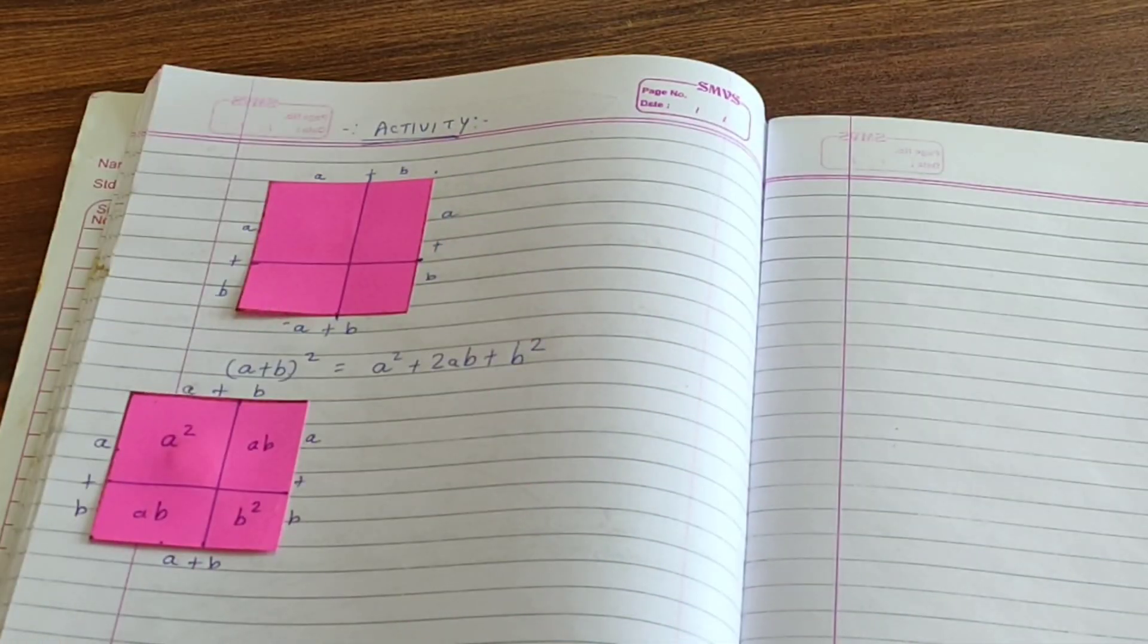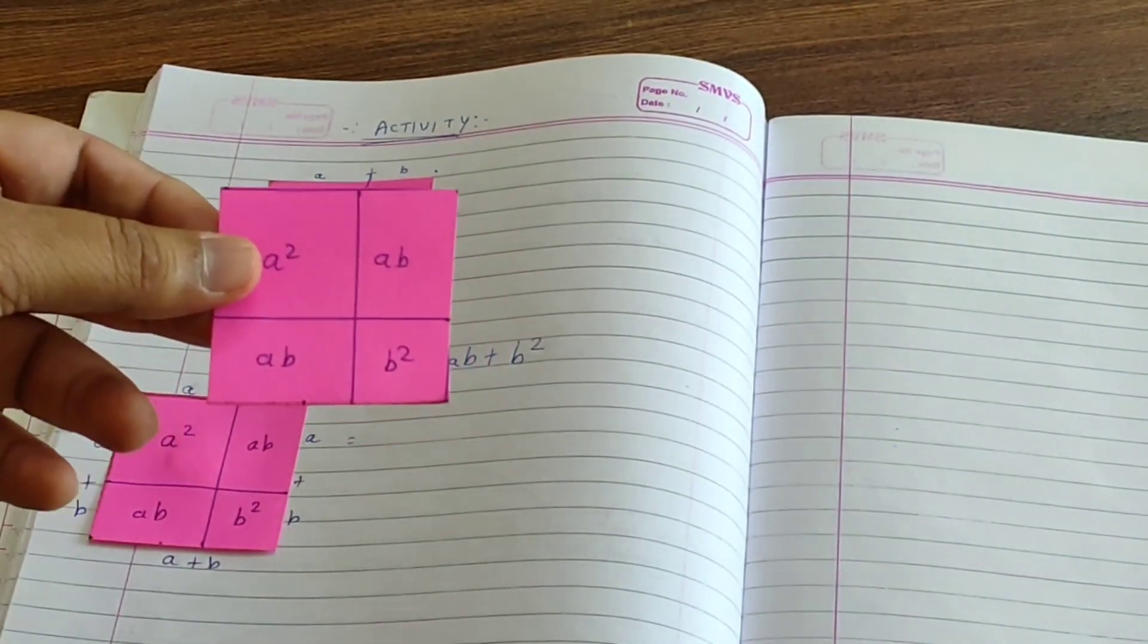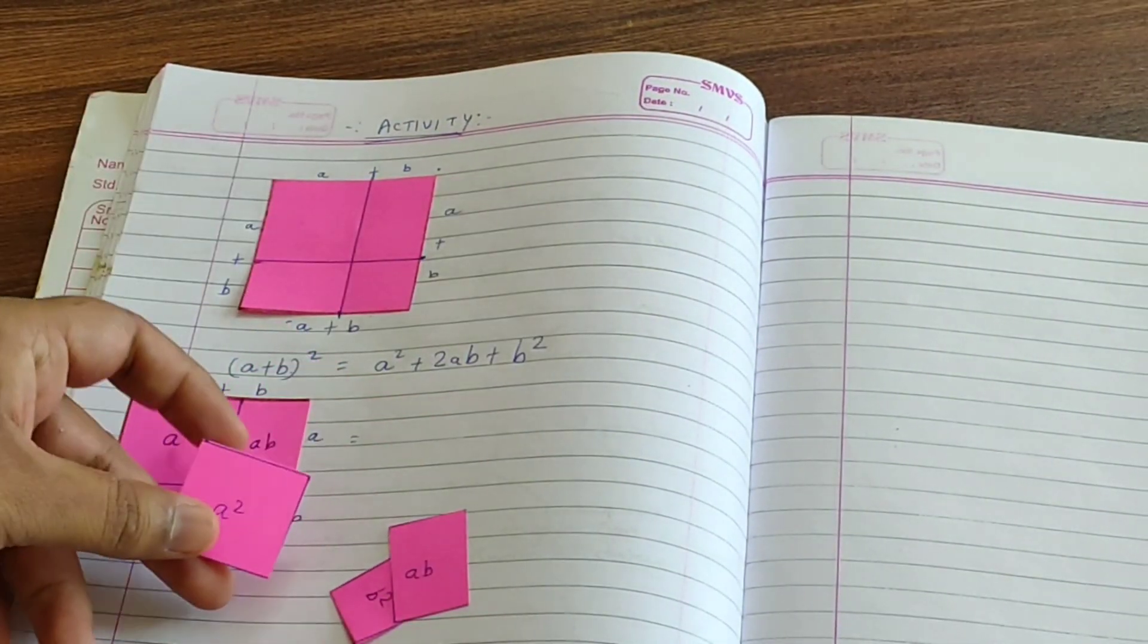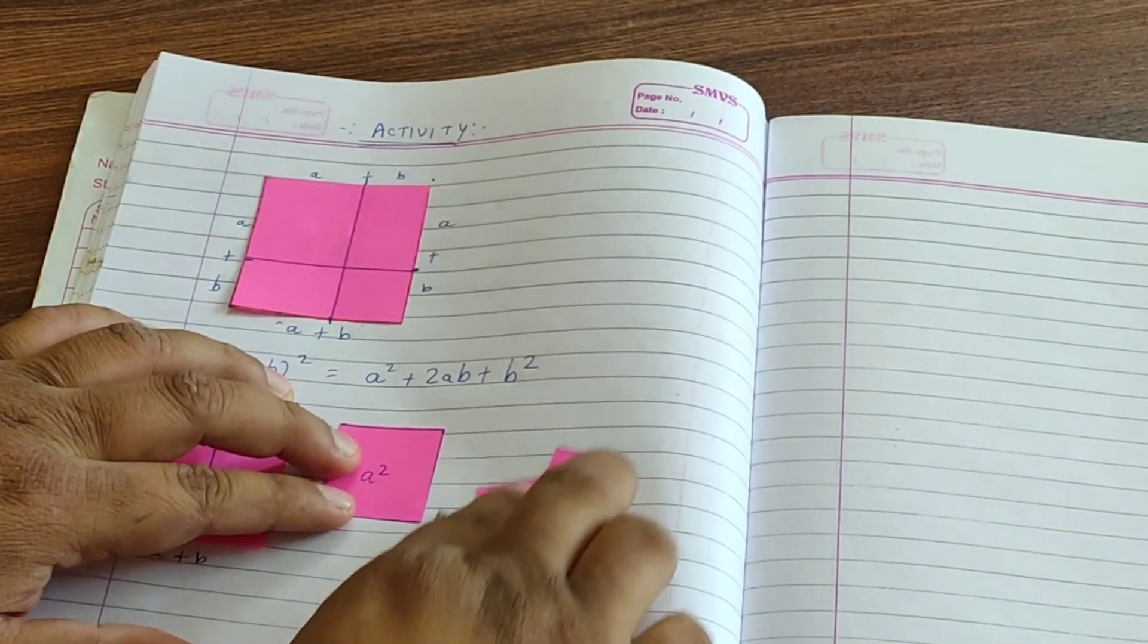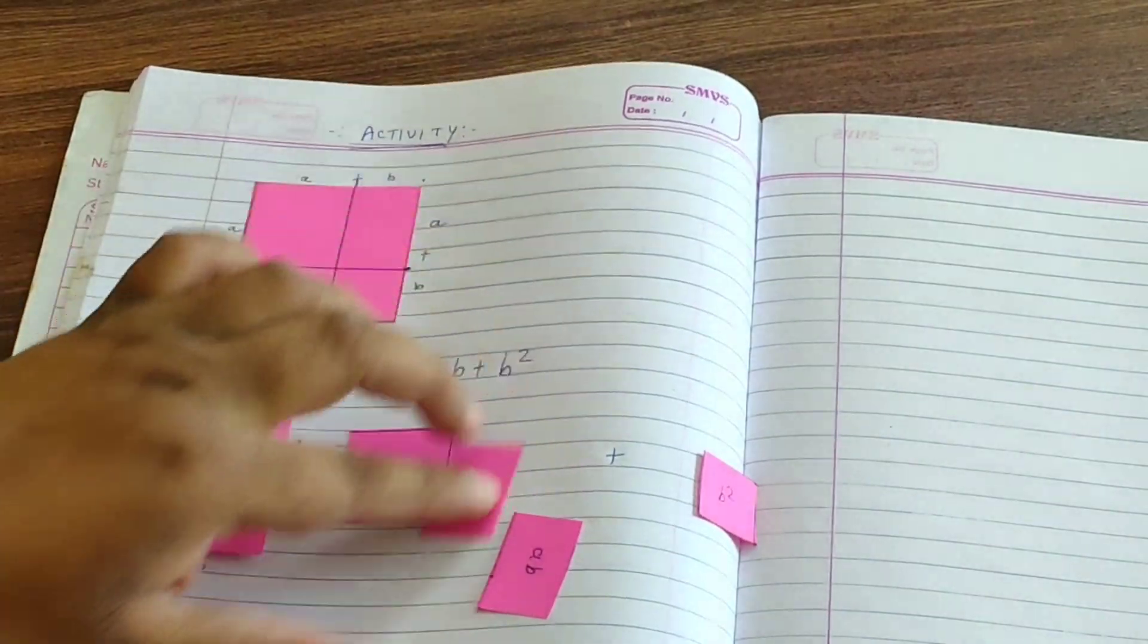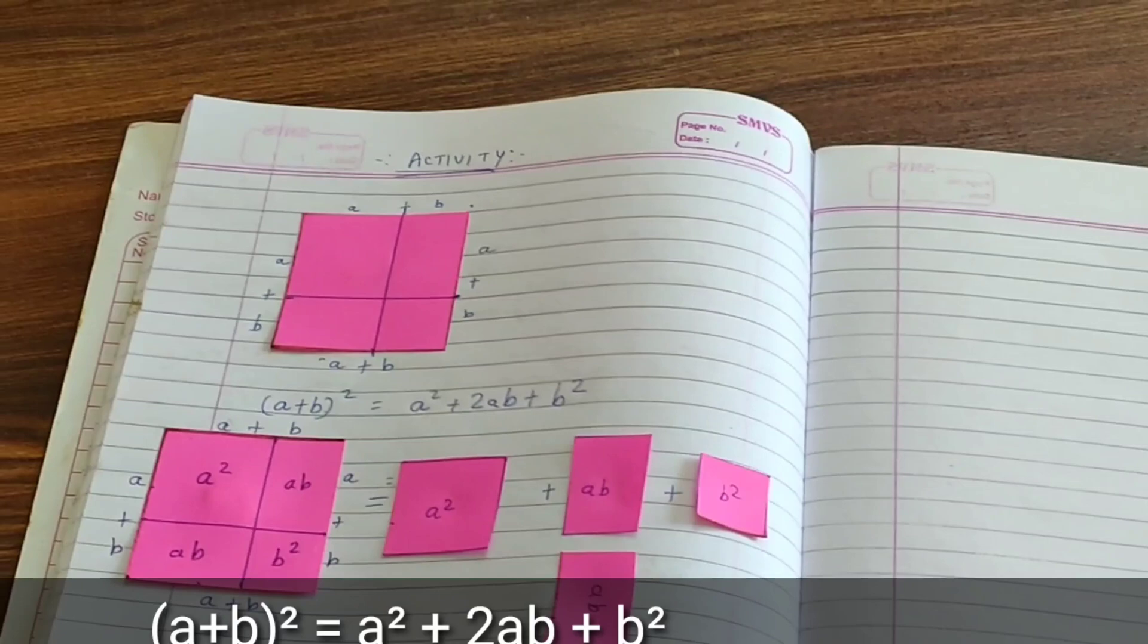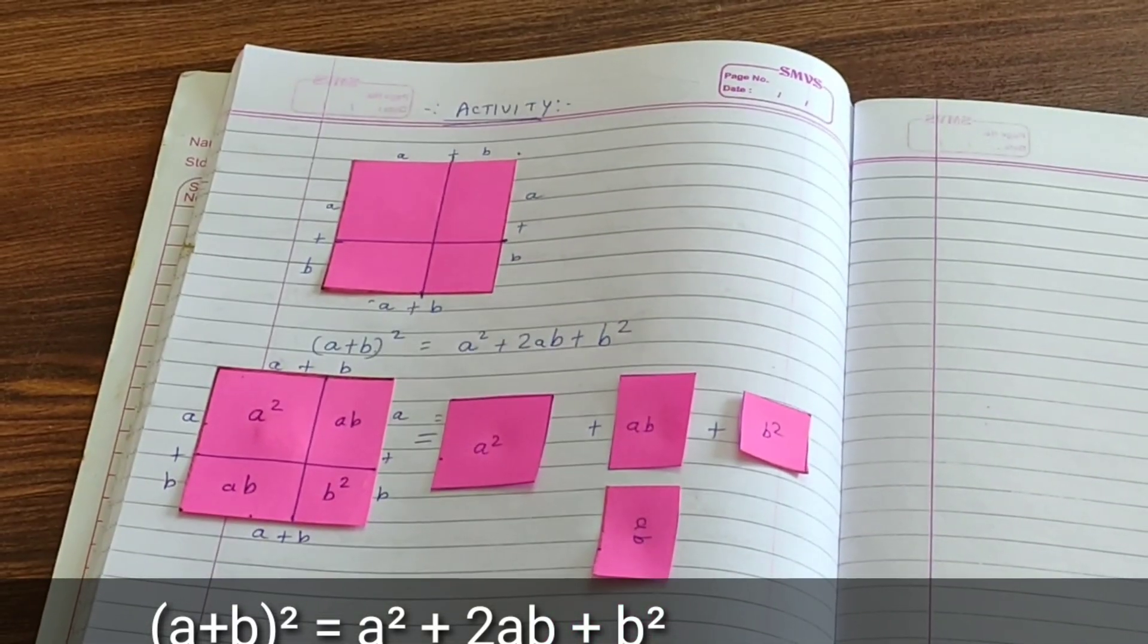Now it's time to cut the papers. We'll have parts a², b², ab, and ab, and we can paste them on paper so that children can understand this identity: a² + 2ab + b².